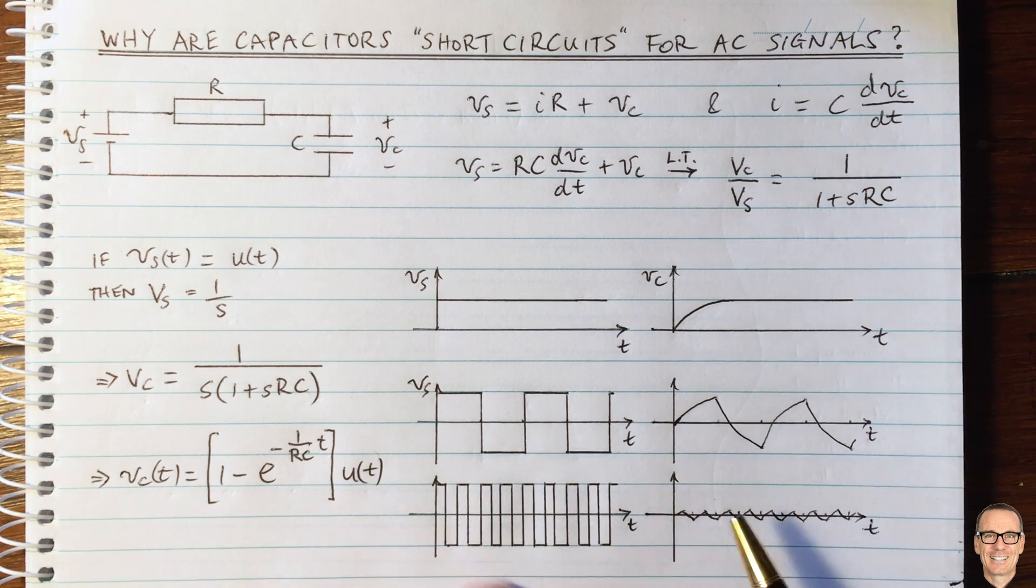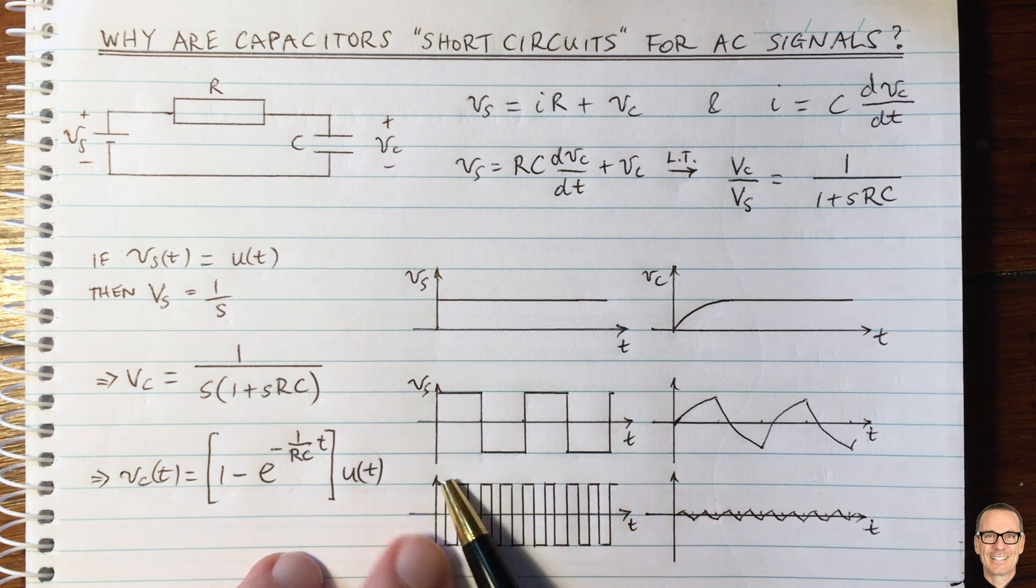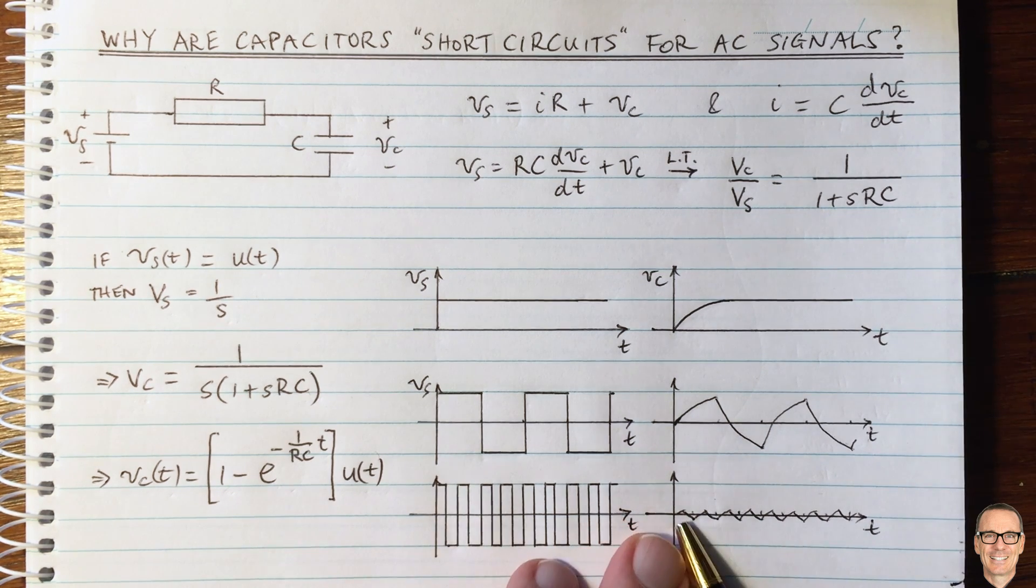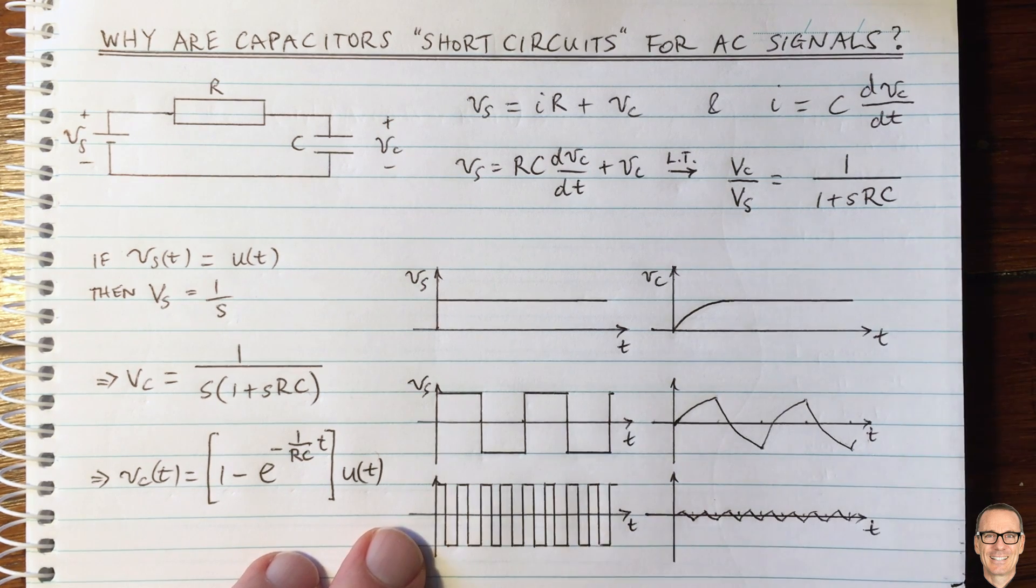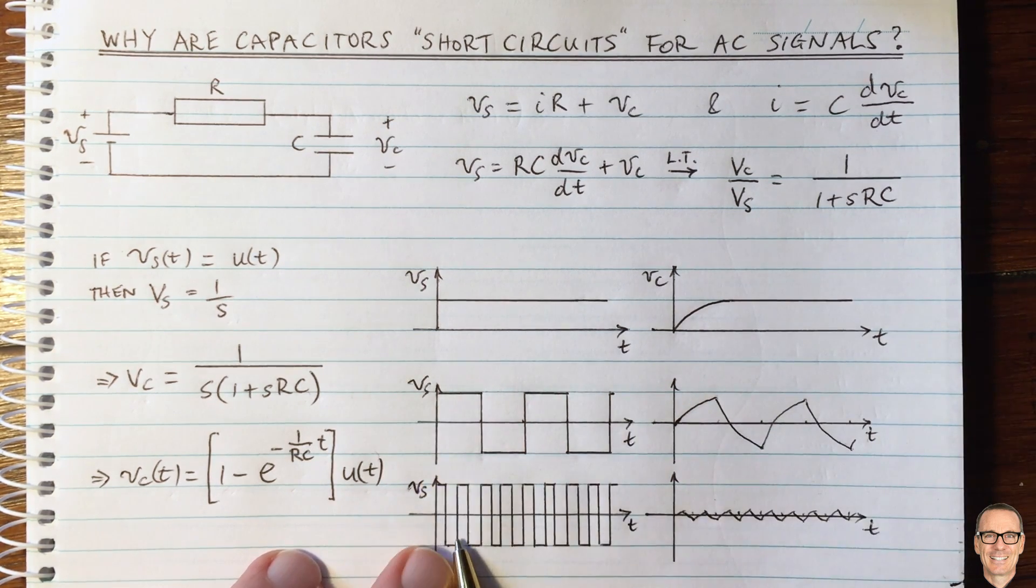And the faster I switch this, the less chance there is for the capacitor to start responding before the opposite polarity comes. So you can see here that the input voltage is an alternating current. In this case, it's a square wave.